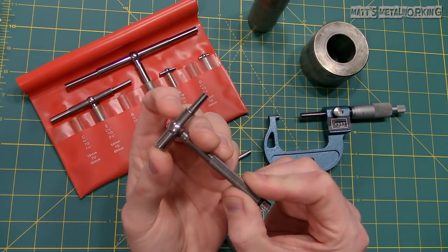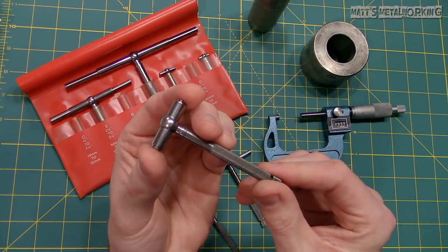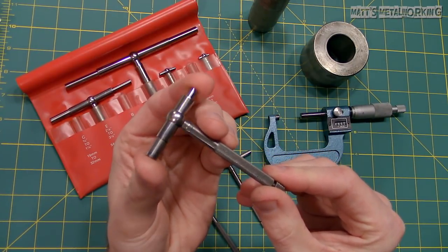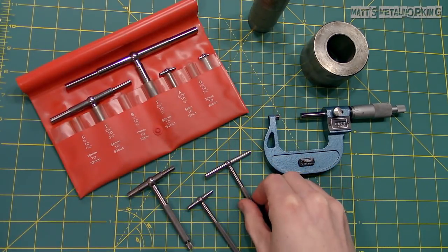This particular model has two plungers. They both move independently and are under spring tension. Once the thumb screw is locked it holds the plungers into place. Once released these plungers extend outward.